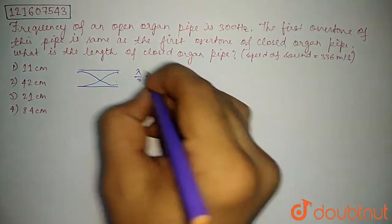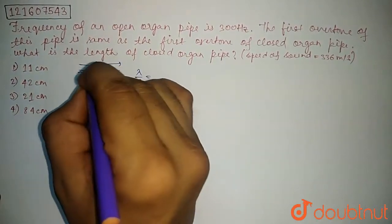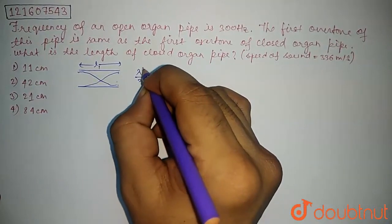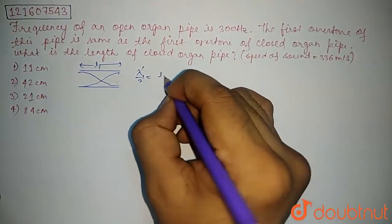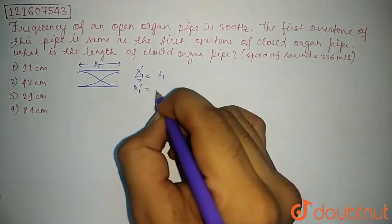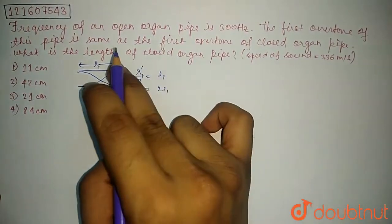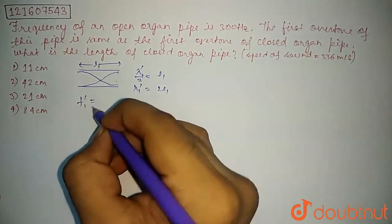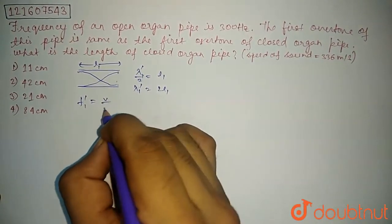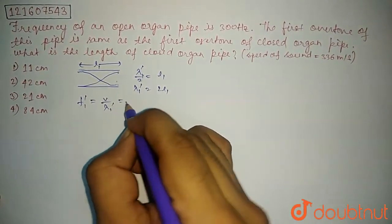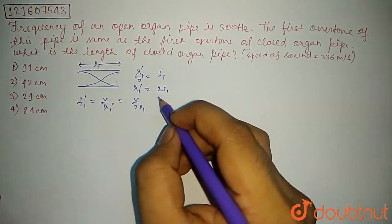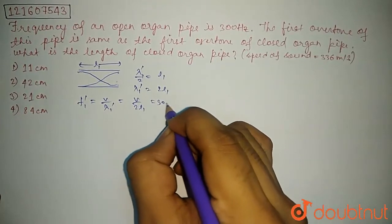Lambda by 2 is equal to the length L1. Lambda 1 dash is equal to 2L1, which is equal to V by lambda 1 dash, which is equal to V by 2L1, and here it is 300 hertz.